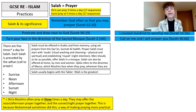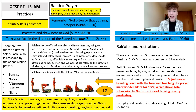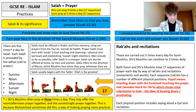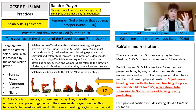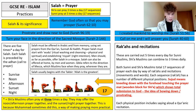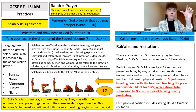Salah will usually begin with the Takbir — 'Allah is the greatest.' We need to talk about rakas and recitations. These are carried out five times every day for Sunni Muslims, and Shia Muslims may combine them to three times daily. Both Sunni and Shia Muslims total 17 sequences of prayer each day by way of rakas and recitations — that refers to movements and the words that accompany those movements, such as verses from Quranic recitation. Each sequence of movements, each raka, has a number of different physical positions.